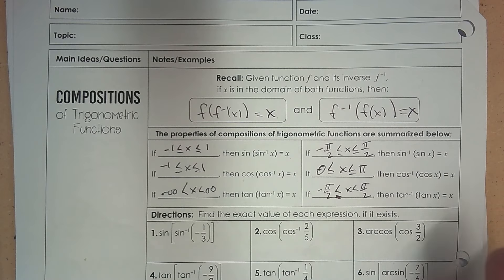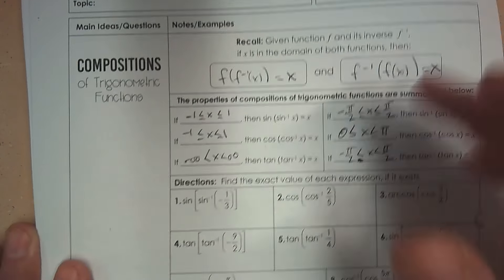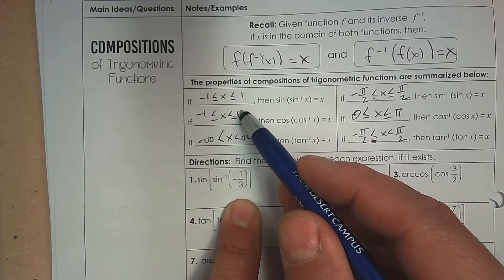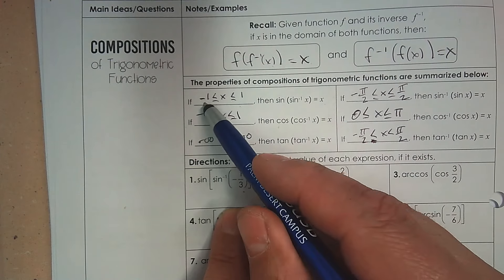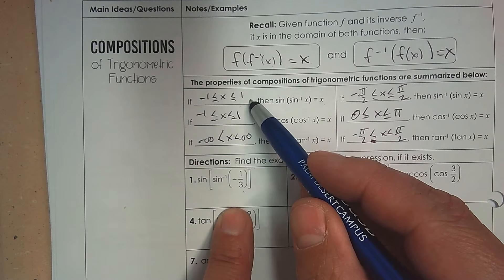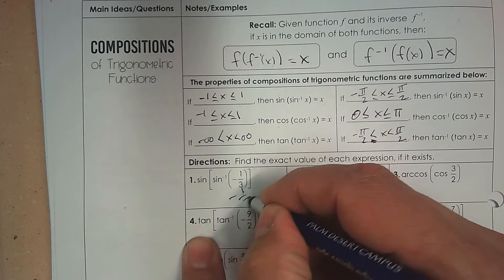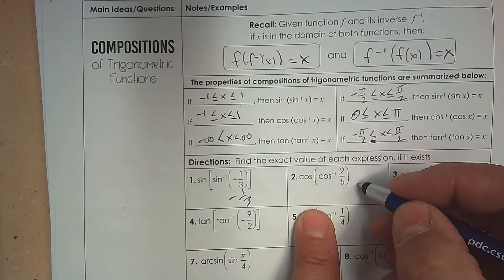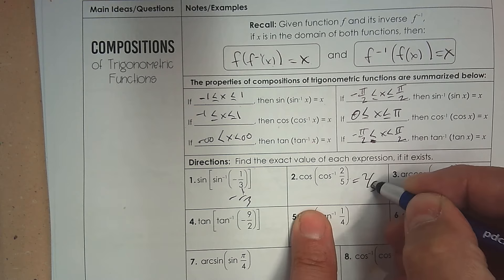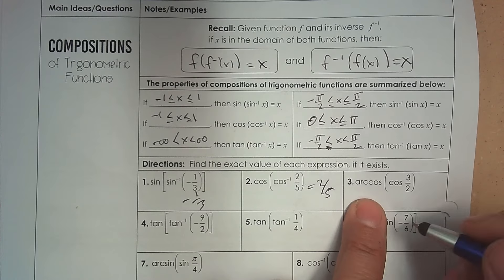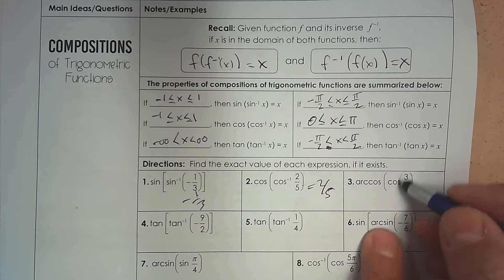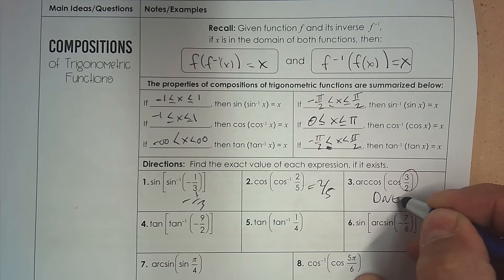For number 1, the number is inside the range between negative 1 and 1, so they cross out and the answer is just negative one-third. Number 2: the number is between negative 1 and positive 1, so they cross out and the answer is two-fifths. For arc cosine and cosine with 3 over 2 — that's too big, larger than 1 — so this does not exist.